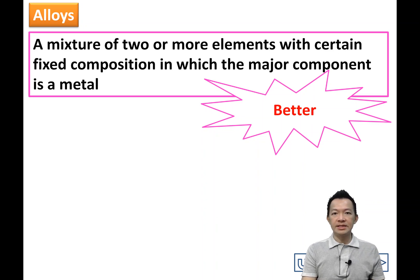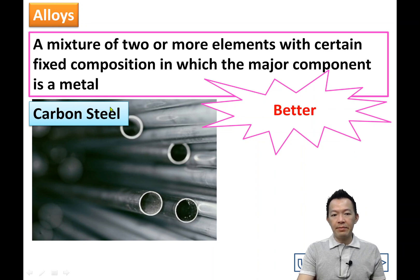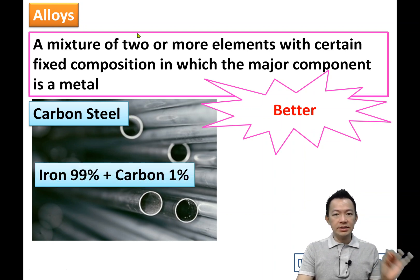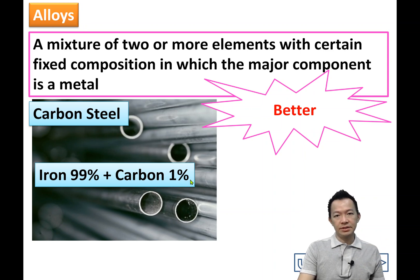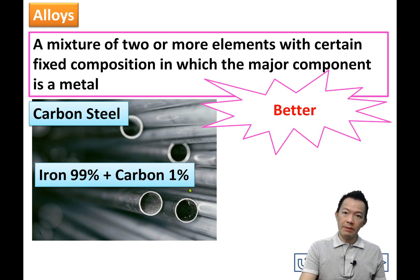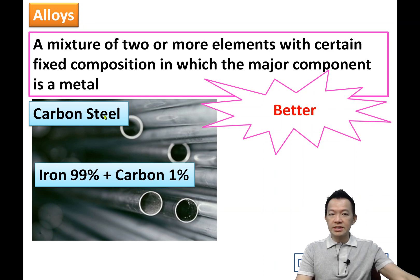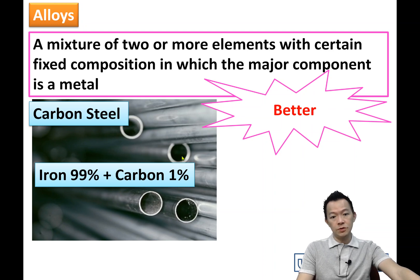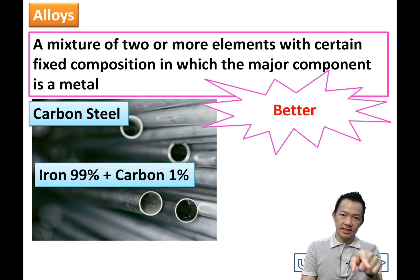This sentence tells you very clearly what alloy means. For example, carbon steel is a mixture of about 99% iron plus 1% carbon — two or more elements mixed together, in which the major component is a metal. When you go for your exam, this is your best answer.